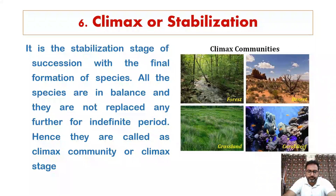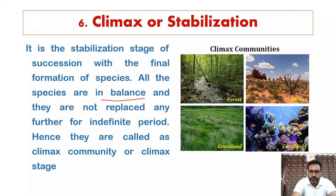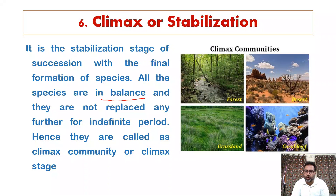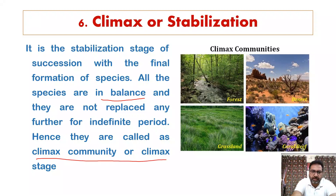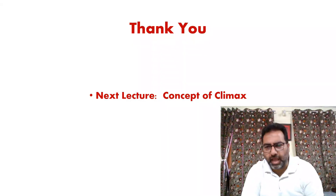The last step in ecological succession is climax or stabilization. This is the stabilization stage with the final formation of species in balance. All the species are in balance and are not replaced by any other species for an indefinite period. That is why we call it the climax community or climax stage — a stable, balanced stage not replaced by further communities.